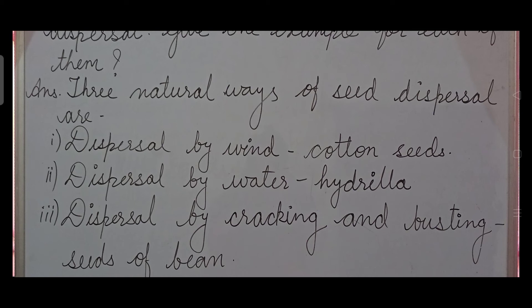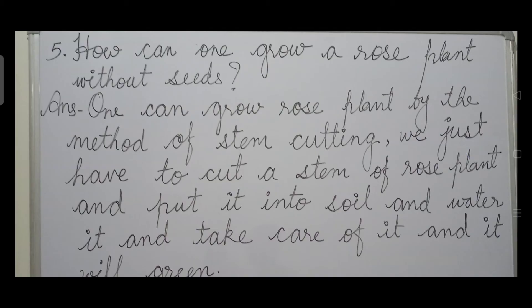Question number five: how can one grow a rose plant without seeds? Answer: One can grow a rose plant by the method of stem cutting. We just have to cut a stem of a rose plant and put it into soil and water it.